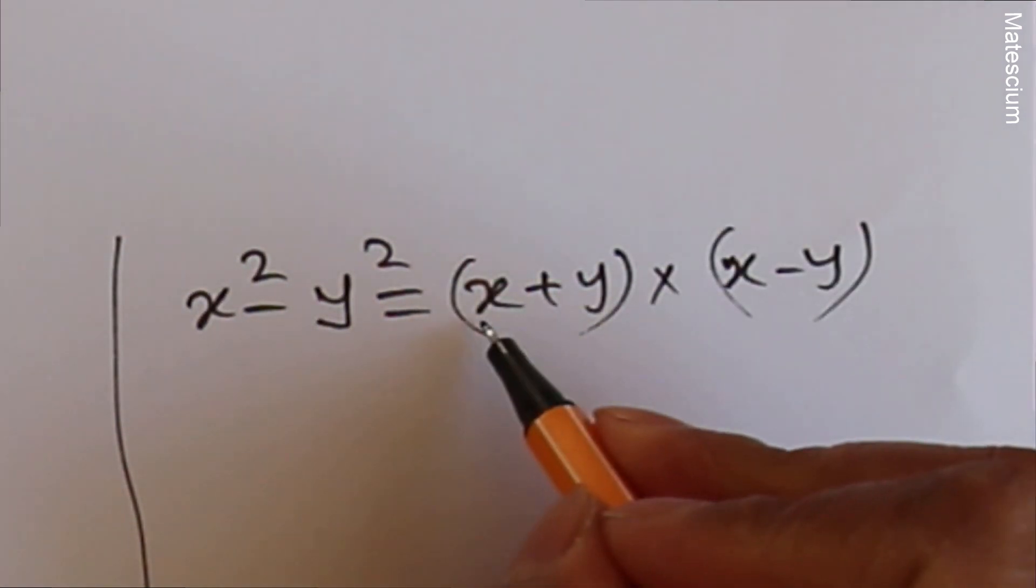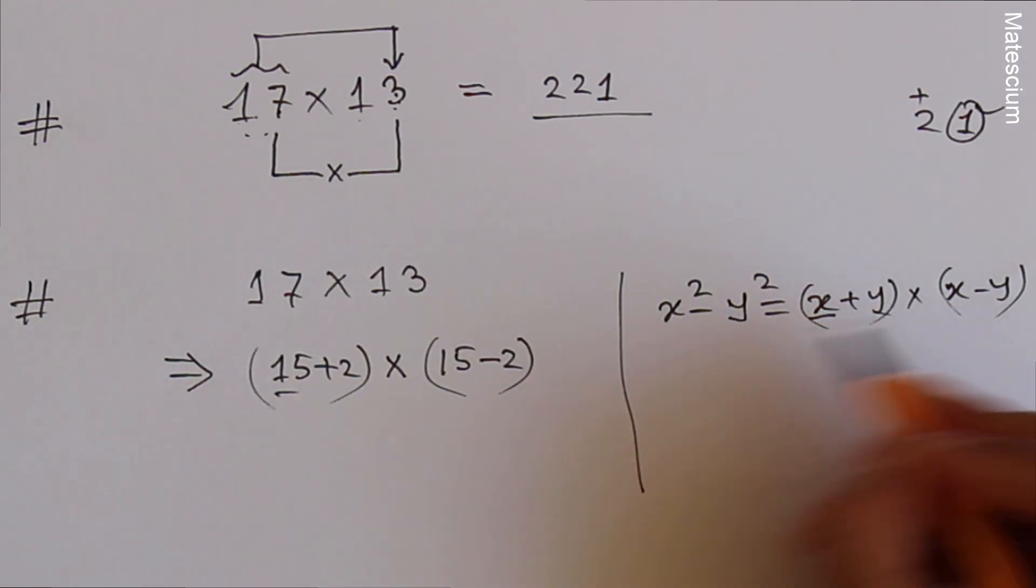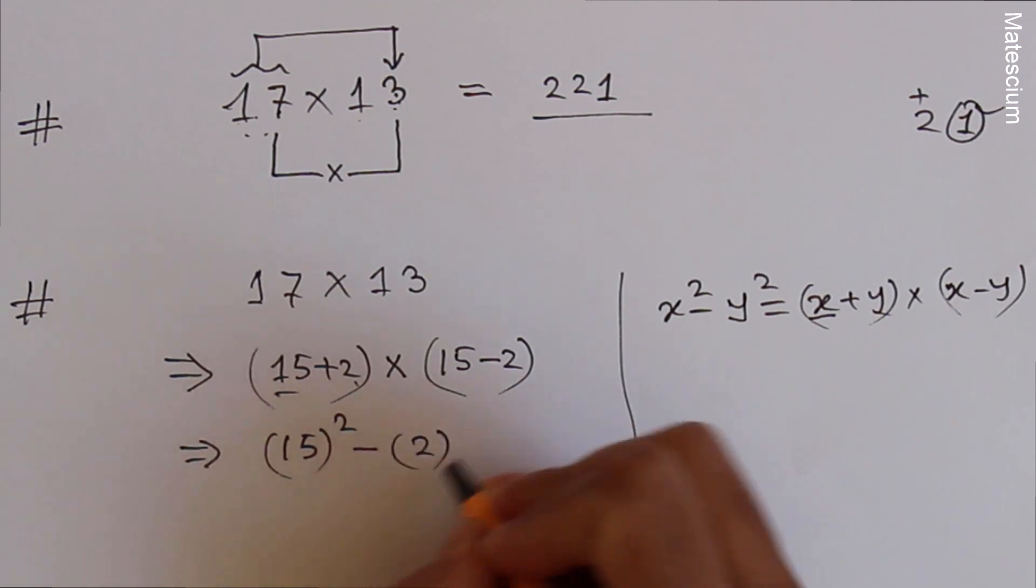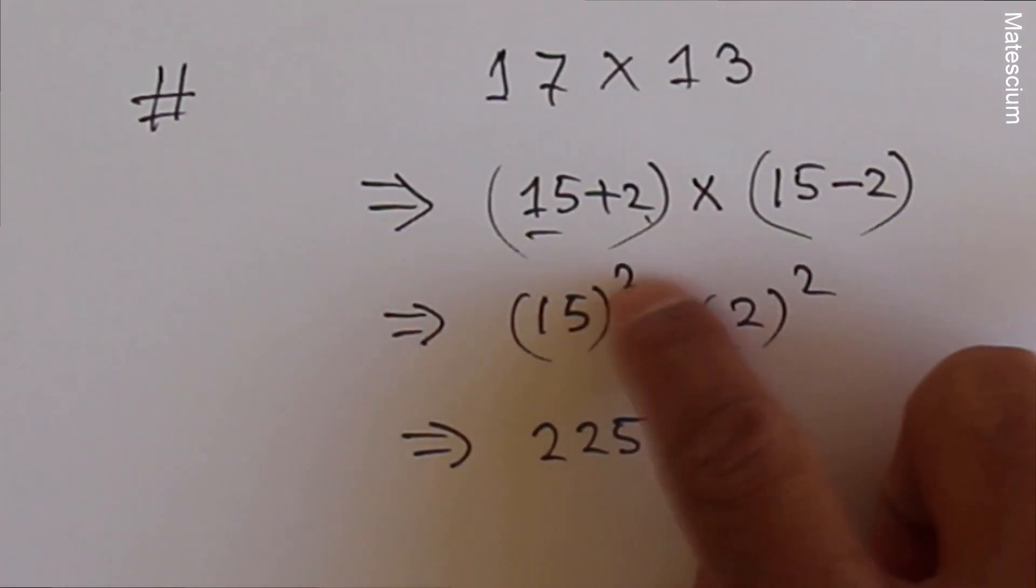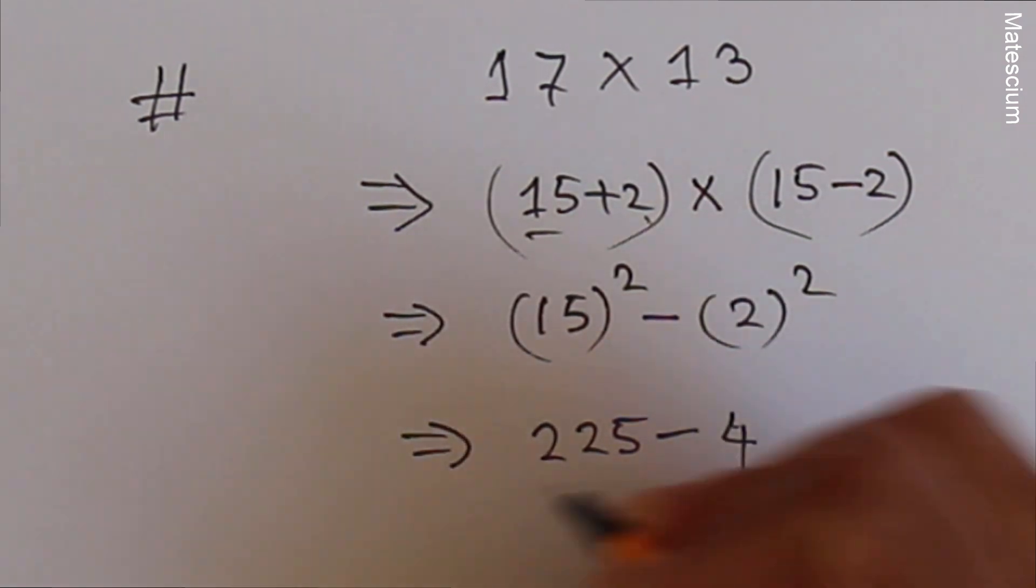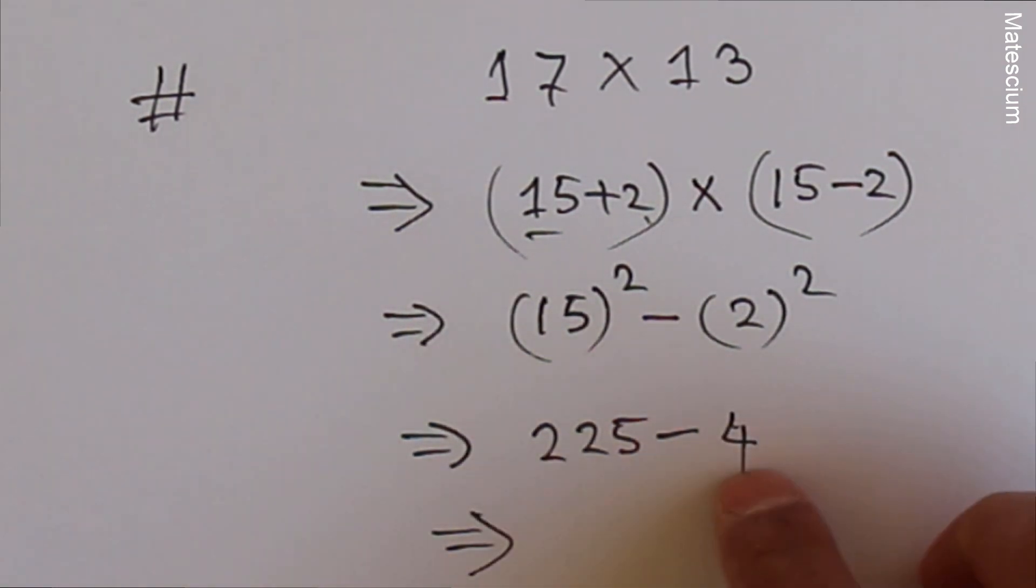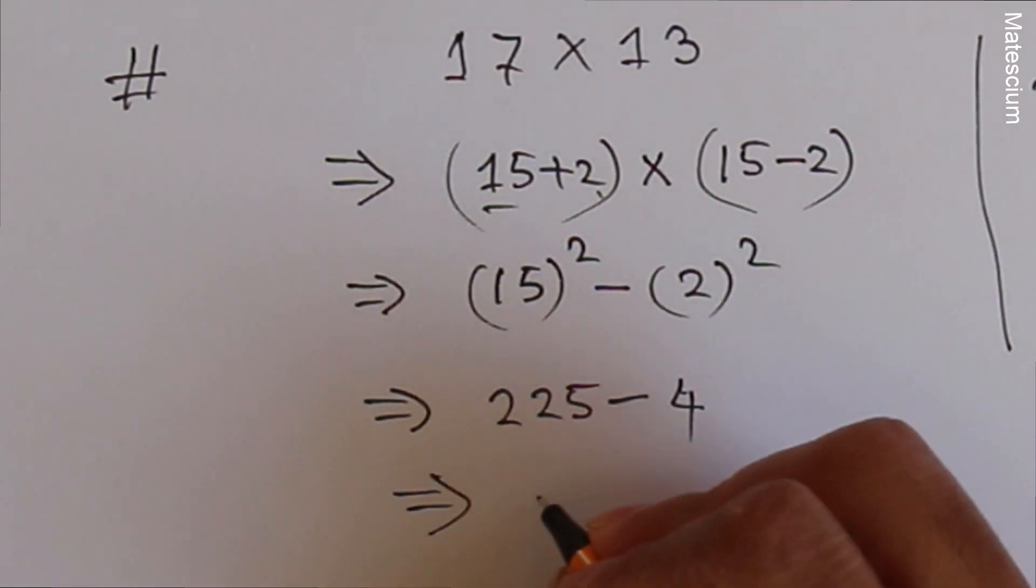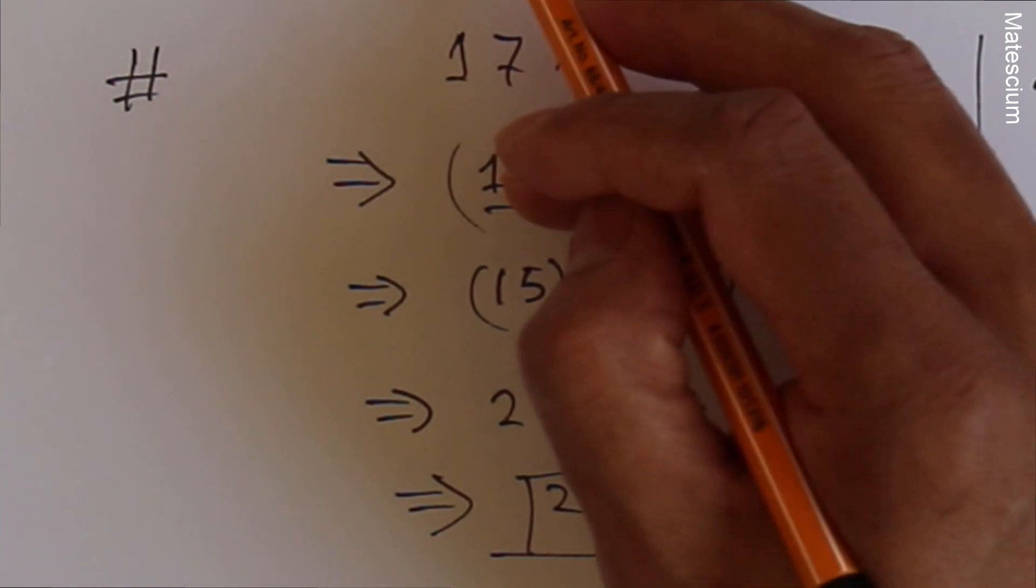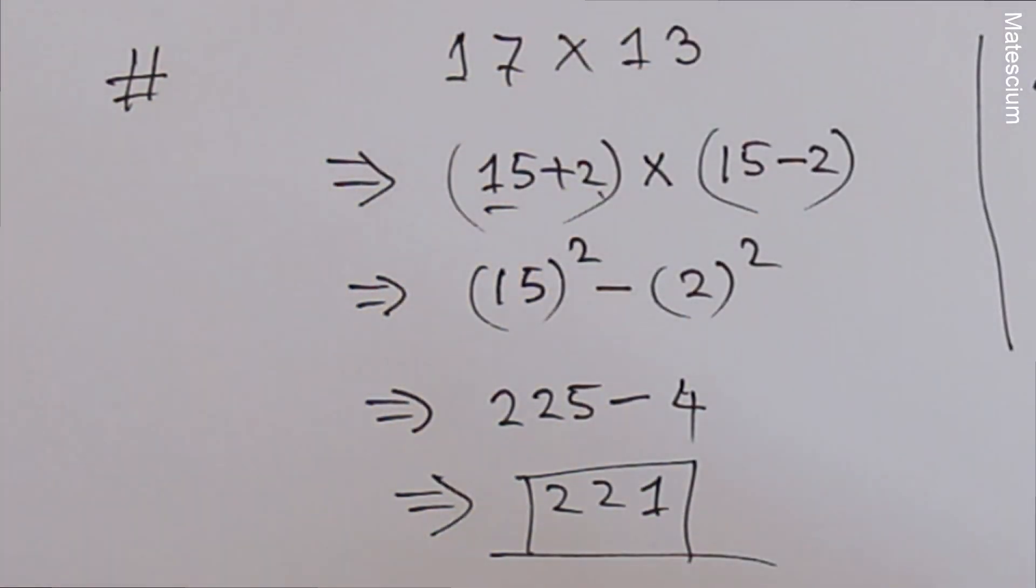That means you can consider x as 15 and y as 2. 15² minus 2². 15² means 225 minus 2² is 4. So 225 minus 4 is 221. This is the result. I can multiply 17 times 13 two different ways. Isn't it interesting?